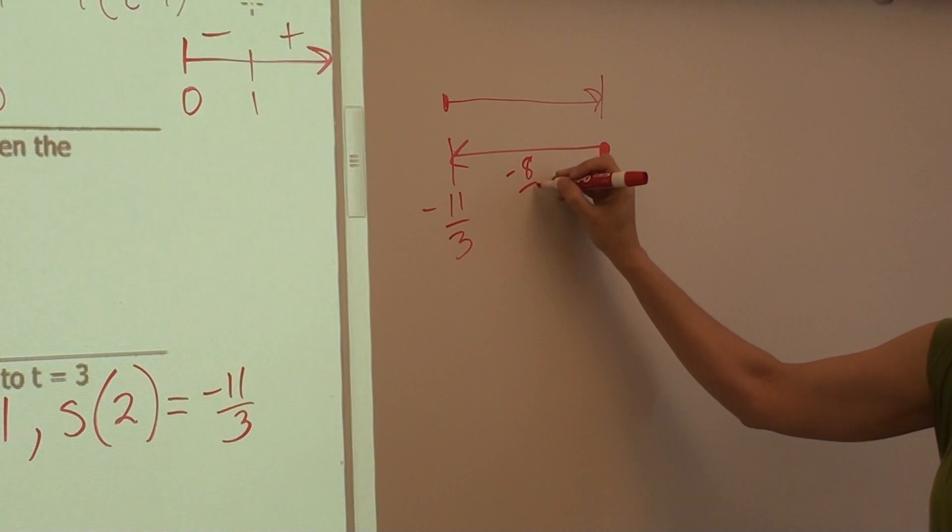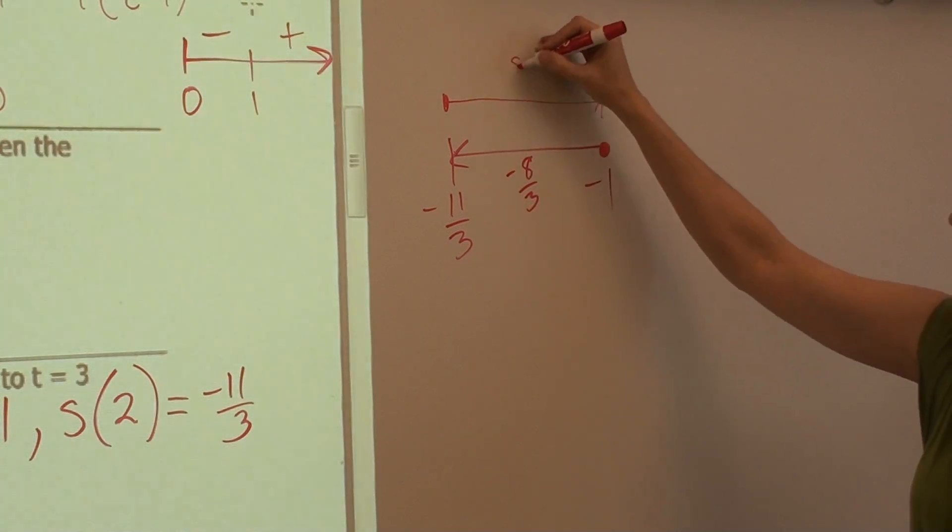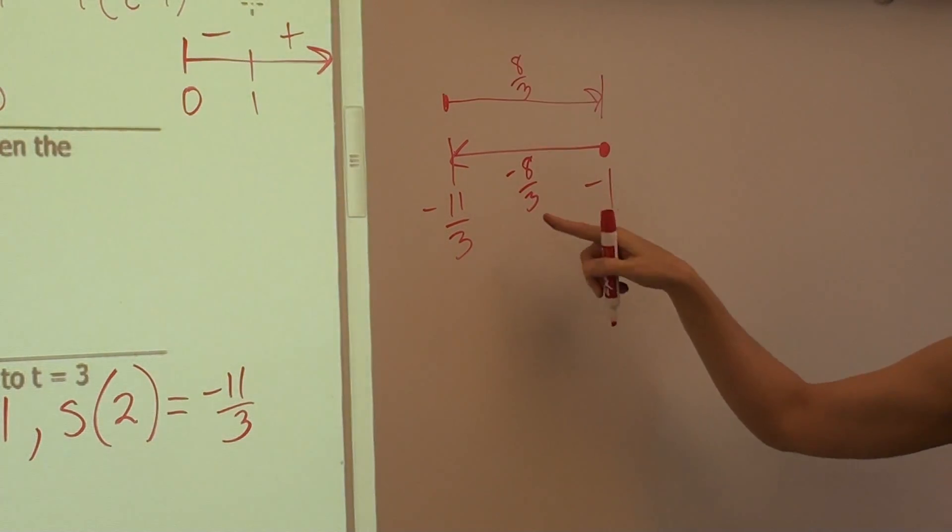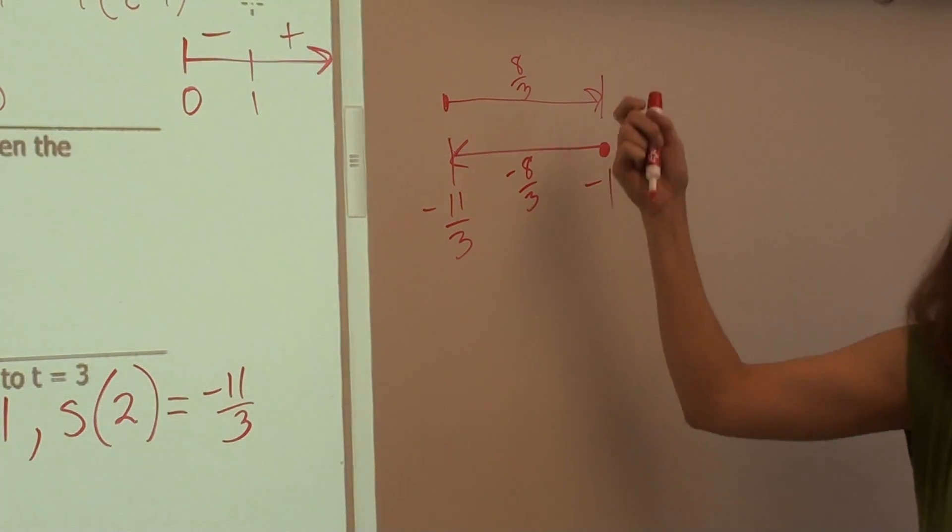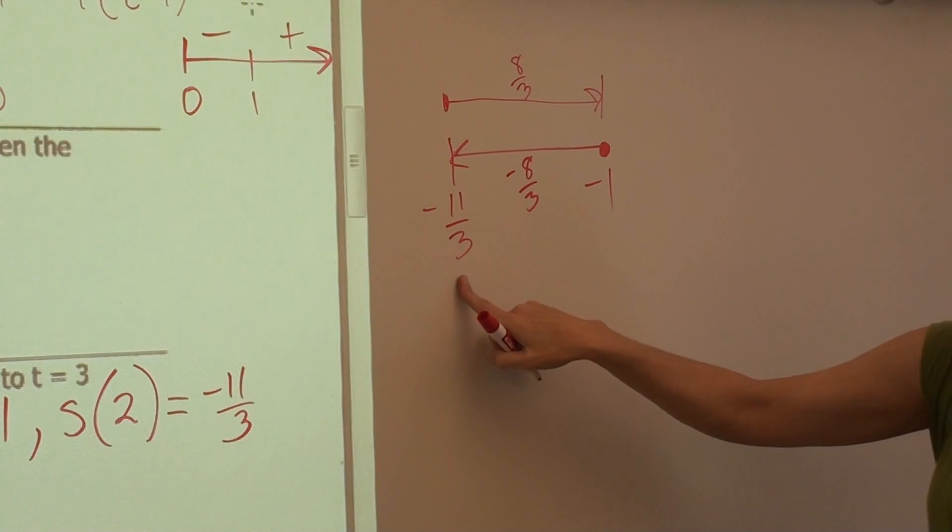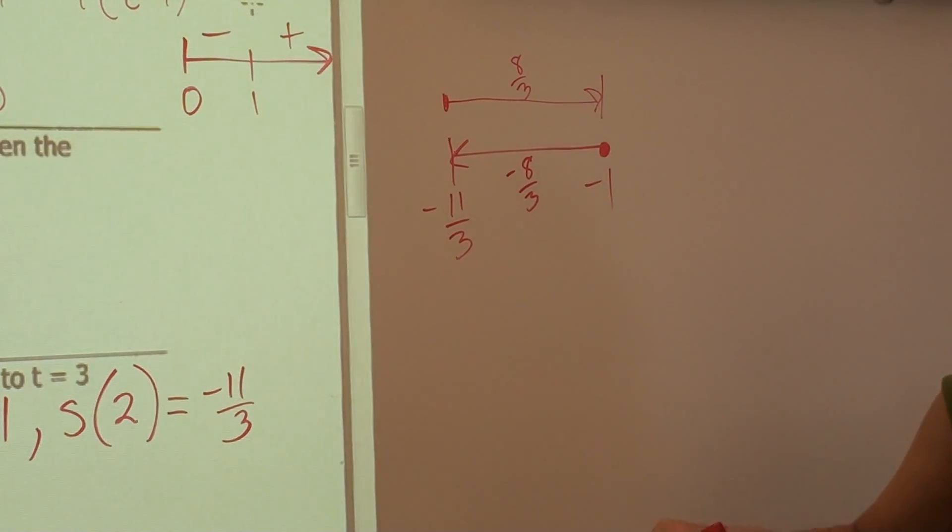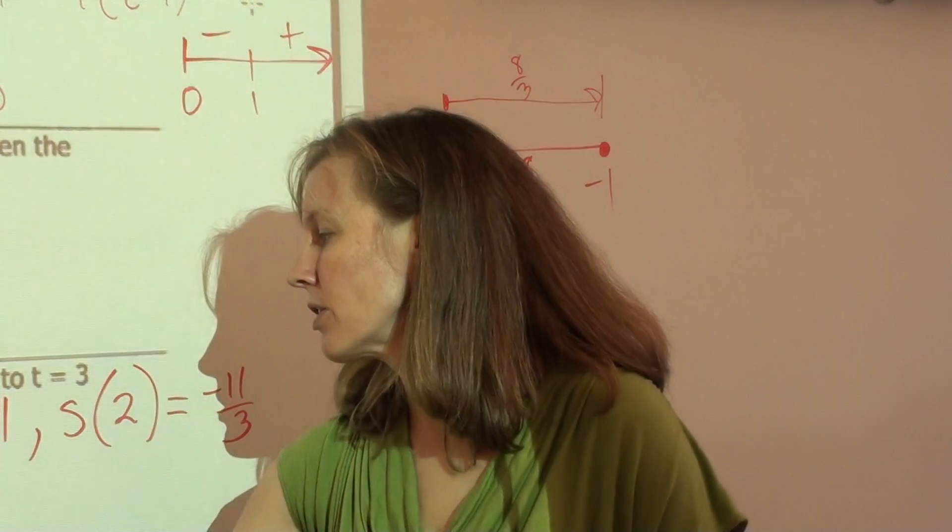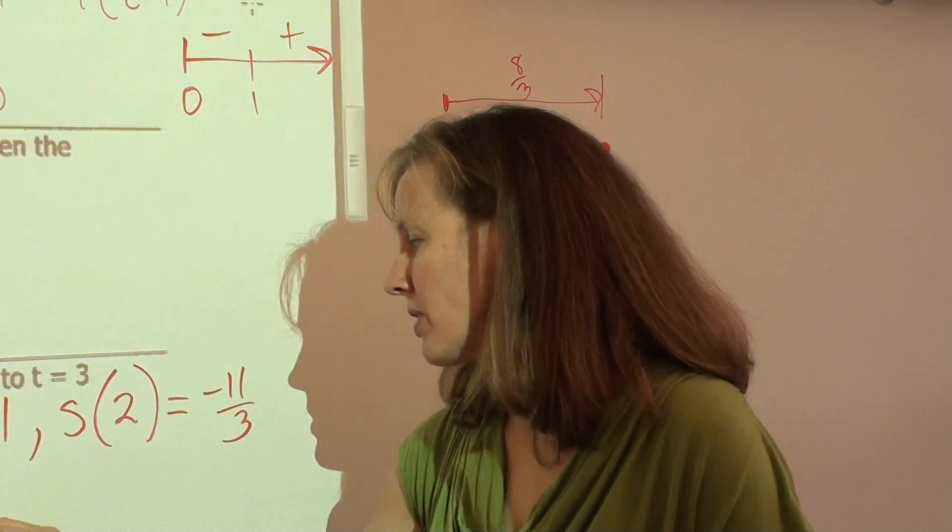Now this is why I say absolute value, because if you add these you're going to get zero, which is just displacement. So I moved 8 thirds plus another 8 thirds, so 16 thirds. You got to take the absolute value of everything.